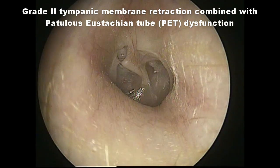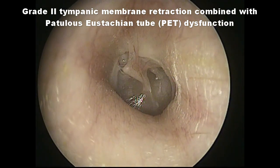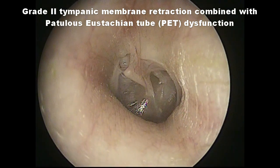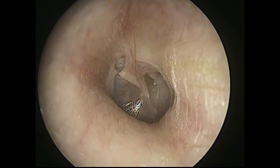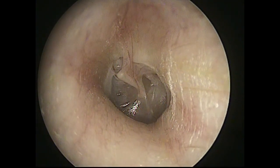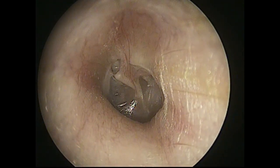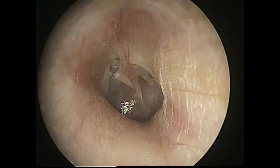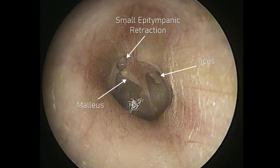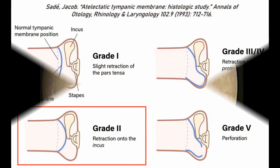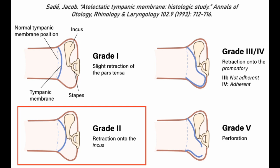In this case, we see the autoscopic video of a patient with grade 2 tympanic membrane retraction. Grade 2 retraction in the SAID classification means that the tympanic membrane is in contact with the incus but not in contact with the promontory. This condition usually occurs because of eustachian tube dysfunction for a long period of time, especially at young ages. The negative pressure on the middle ear causes an inward distortion, retraction, and a weakening of the tympanic membrane.